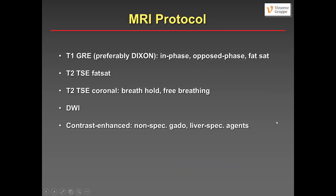How should MRI be performed? There is quite a consensus: T1 gradient echo, preferably Dixon in-phase and out-of-phase with fat saturation; T2 turbo spin echo with fat saturation; T2 coronal without fat saturation, either breath-hold or free breathing. We always add diffusion-weighted imaging, and then contrast-enhanced sequences with either non-specific gadolinium or liver-specific agents.